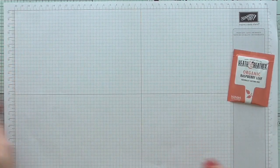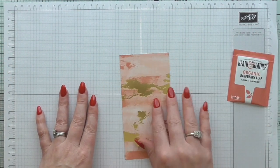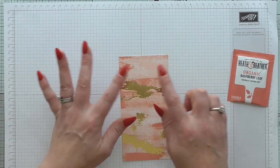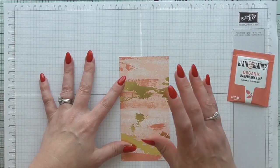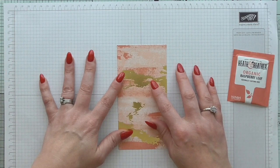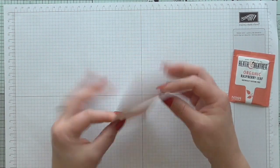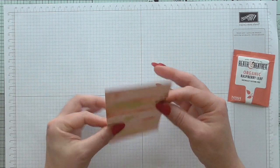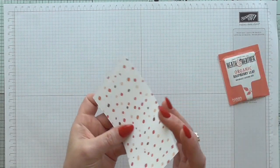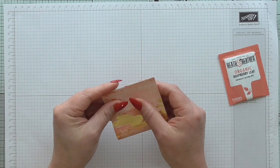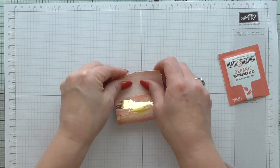So you start off with a piece of DSP which measures three inches by six inches. This is Painted with Love specialty DSP, it's beautiful and it's foiled, it's quite thick and it's double-sided. So all we're going to do is we're going to just fold it in half. Oh, it's so complicated this project, honestly.